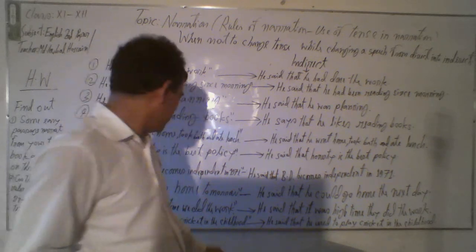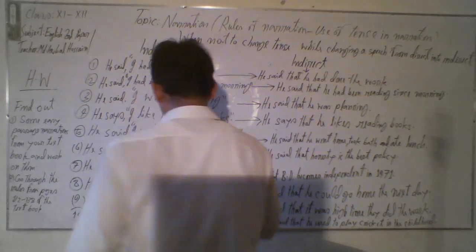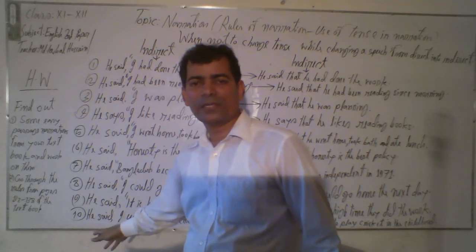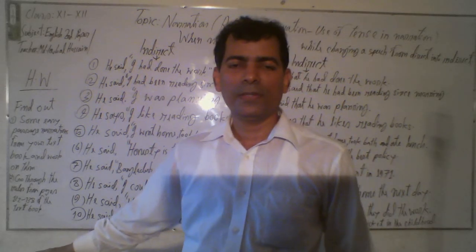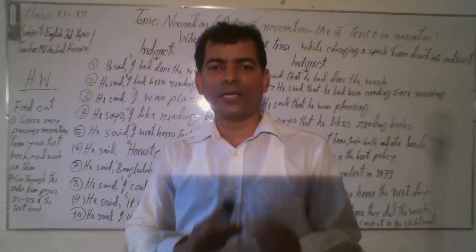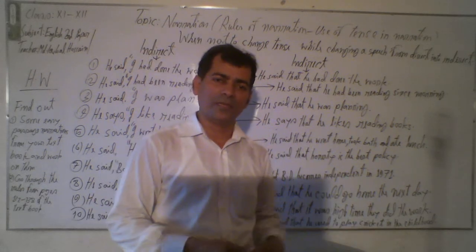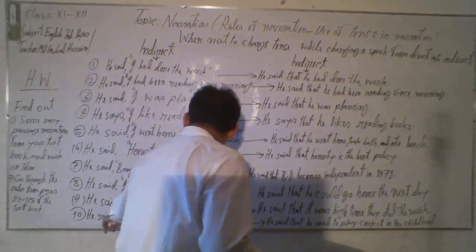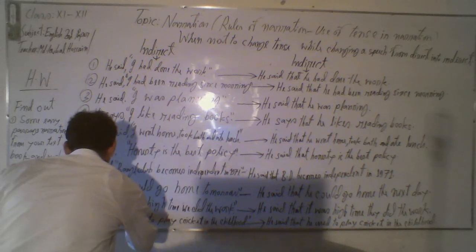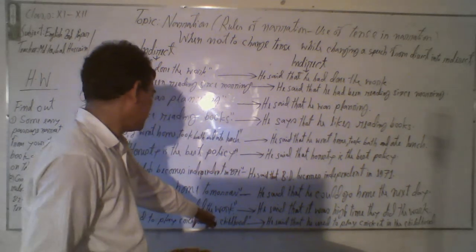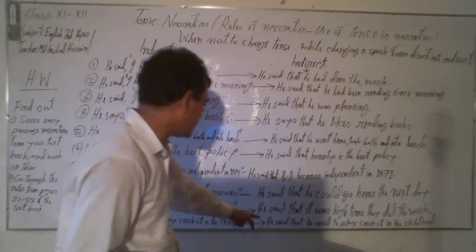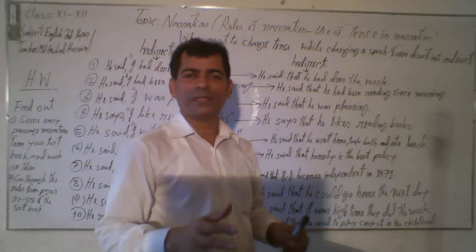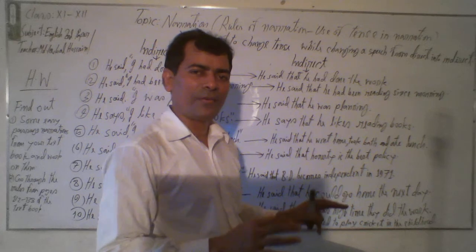Exception ten: 'He said, I used to play cricket in my childhood.' 'Used to' — although it may look like a past indefinite tense structure, the form 'subject + used to' does not change when you convert from direct to indirect narration. In indirect narration: 'He said that he used to play cricket in his childhood.' The 'used to' remains unchanged.